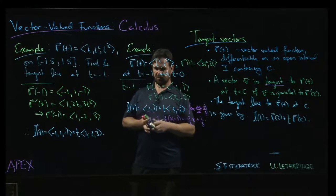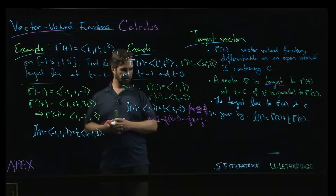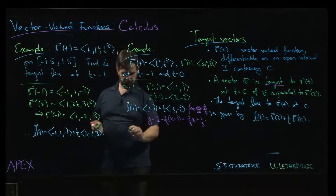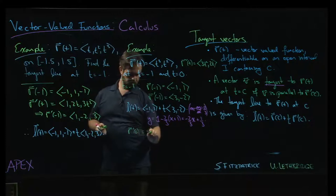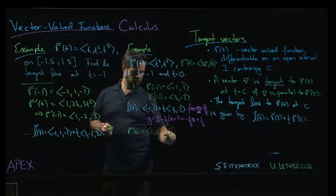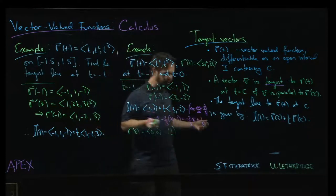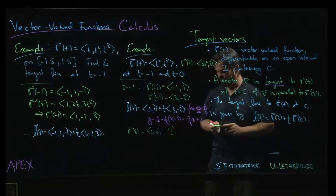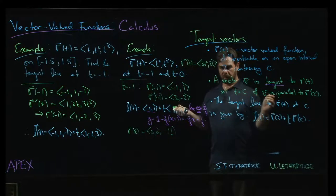Now at t equals 0, at t equals 0, you see that there's a bit of trouble, right? R prime of 0, well, it's the 0 vector, which has no direction. So we can't use it as the direction vector for our curve.